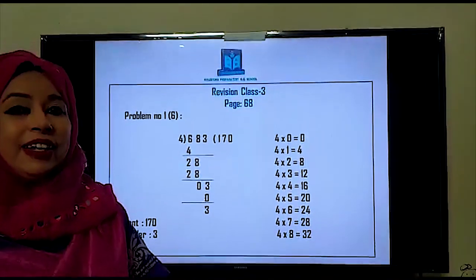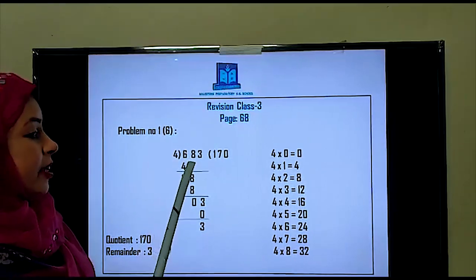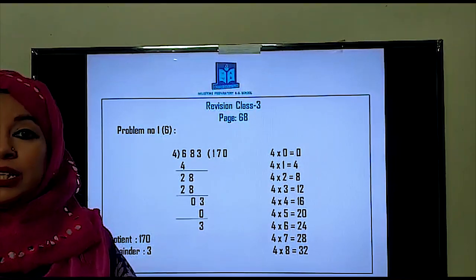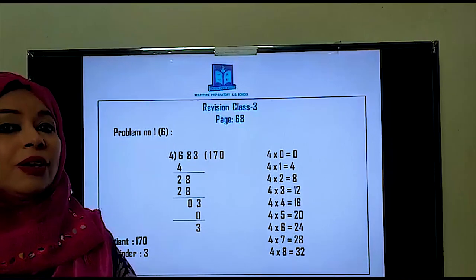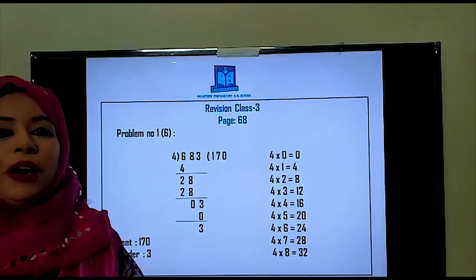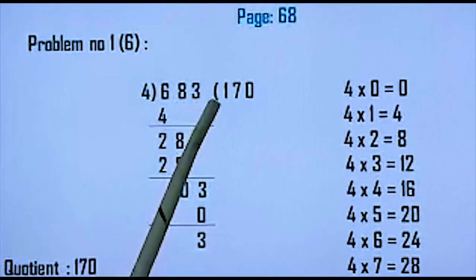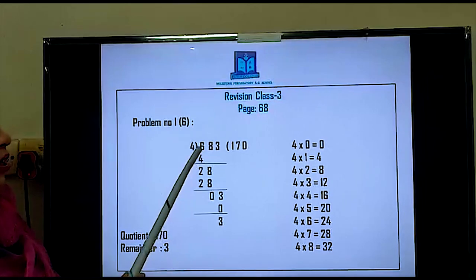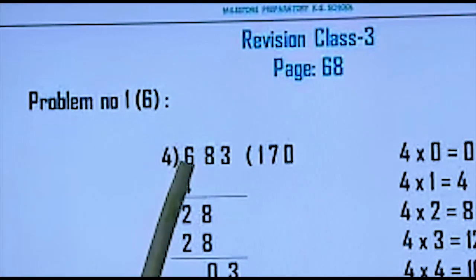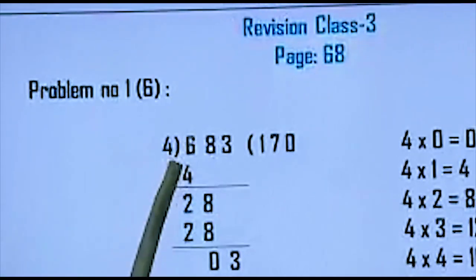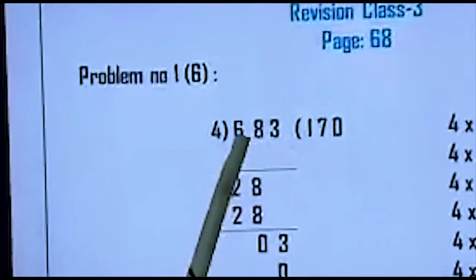What do we have to do first? We have to first compare the digits. You know that in addition, subtraction, and multiplication, we start from the right side. But in division, we have to start from the left side. The left side digit is 6. We take the first digit — we cannot divide all digits together. Here 6 is greater than 4, so we can take the first digit.